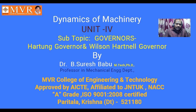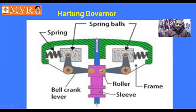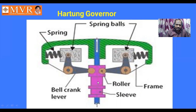Let us go for the Hartnell Governor first. The parts of the Hartnell Governor include springs — there is a first spring and a second spring. There are also rollers, a Bell Crank Lever, and a Frame. The green-colored part is called the Frame. There is also a Sleeve, and the blue-colored part is called the Shaft. On the shaft, we have a Sleeve mounted.